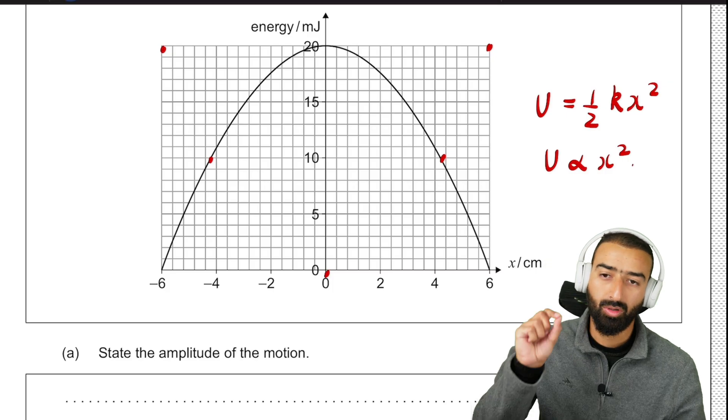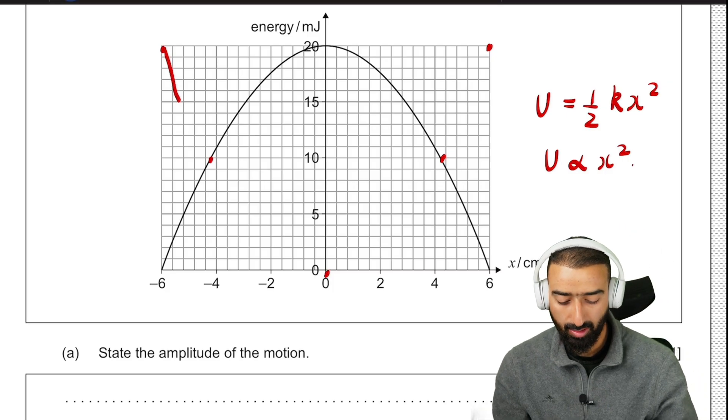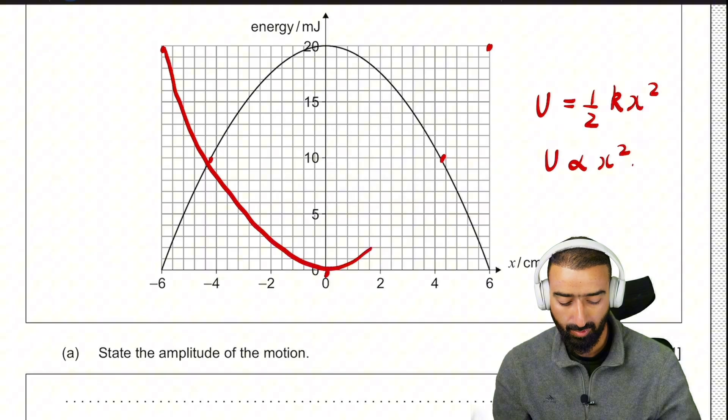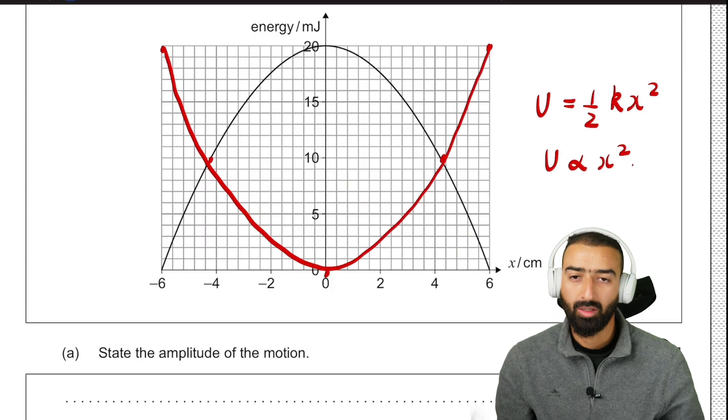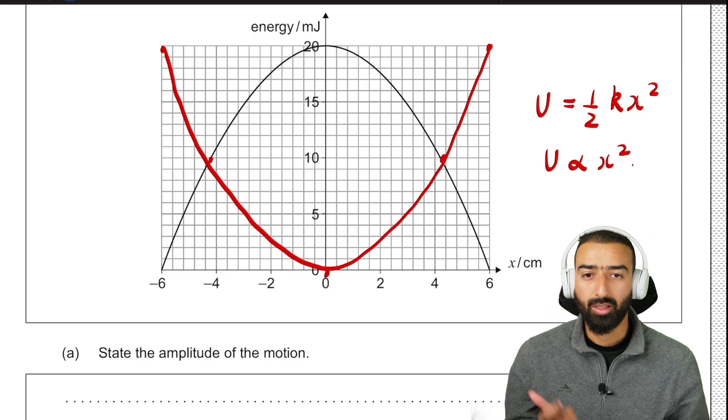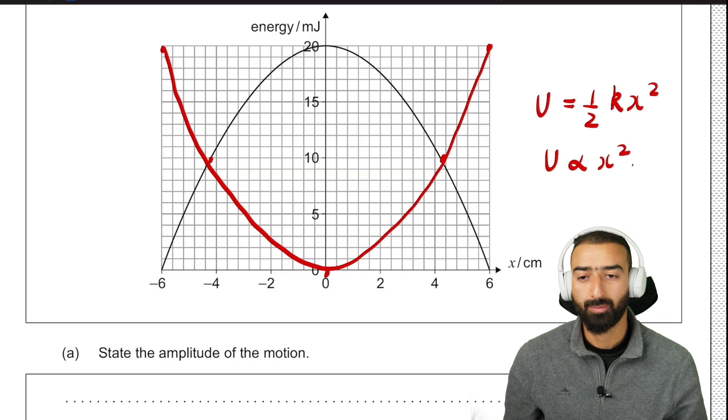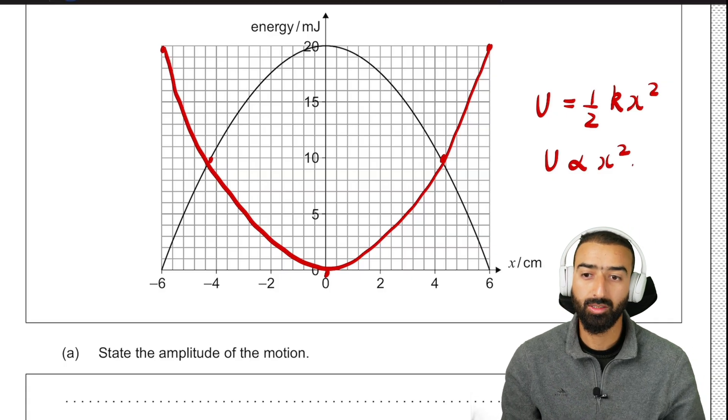So we can draw a sketch of a parabola connecting these points. And this gives us the variation of potential energy with the position. Let's move on to the next part of the problem.